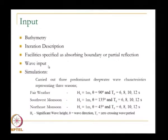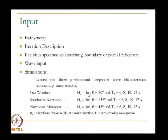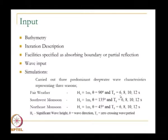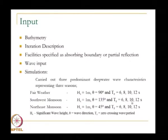We give wave input of 1 meter height — since this is a linear analysis, results can be multiplied by the corresponding wave height for each season. For fair weather the wave direction is 90 degrees, southwest monsoon is 135 degrees, and northeast monsoon is 45 degrees. For each season we do the analysis for each wave period — 6 seconds, 8 seconds, 10 seconds, 12 seconds — covering all combinations of wave height, direction, and period.